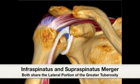As the infraspinatus tendon attaches to the posterior aspect of the greater tuberosity, take note that about one-third of its tendon fibers share an insertion point with the supraspinatus's posterior one-third of its tendon as well. Due to the oblique nature of the infraspinatus' insertion relative to the supraspinatus' insertion to the greater tuberosity, special care should be taken while scanning through this section to avoid false positive tears.